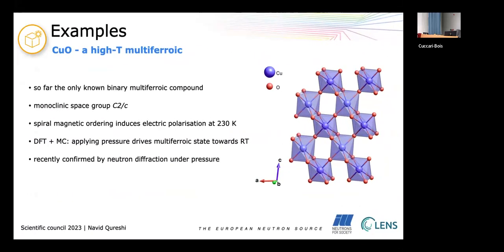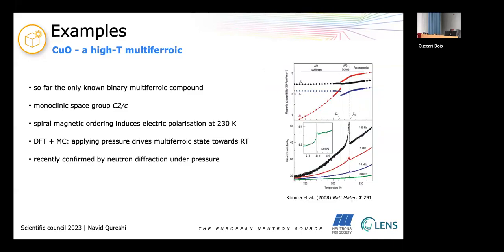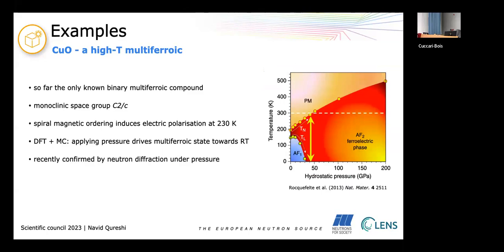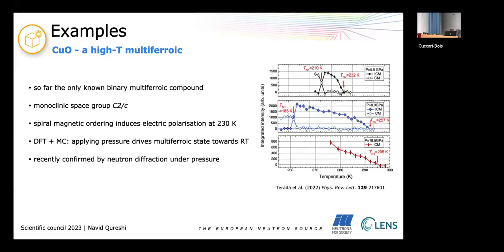The next example is copper oxide which is a high temperature multiferroic. It's so far the only known binary multiferroic compound and it develops an electric polarization at 230K due to a spiral magnetic ordering and the polarization vanishes at 213K where the magnetic structure becomes collinear. It has been shown by DFT and Monte Carlo simulations that applying pressure would drive the multiferroic state towards room temperature which is very interesting and it was also recently confirmed by neutron diffraction under pressure.